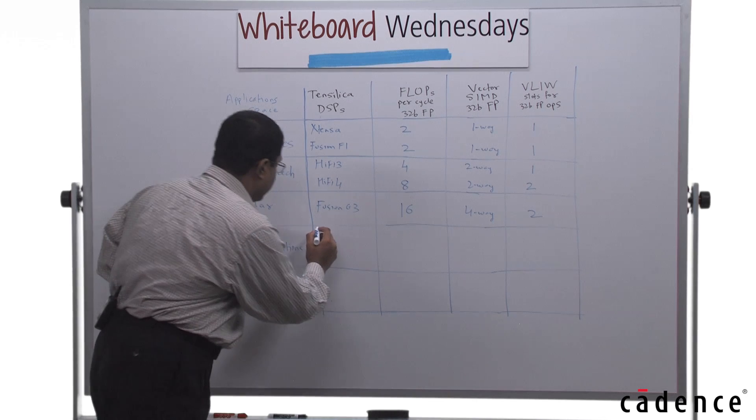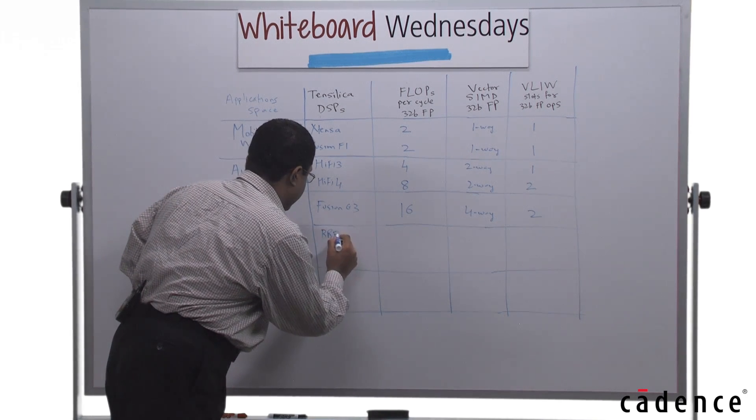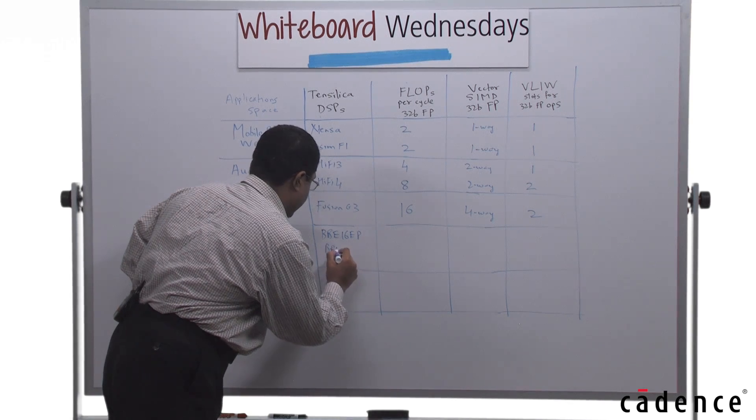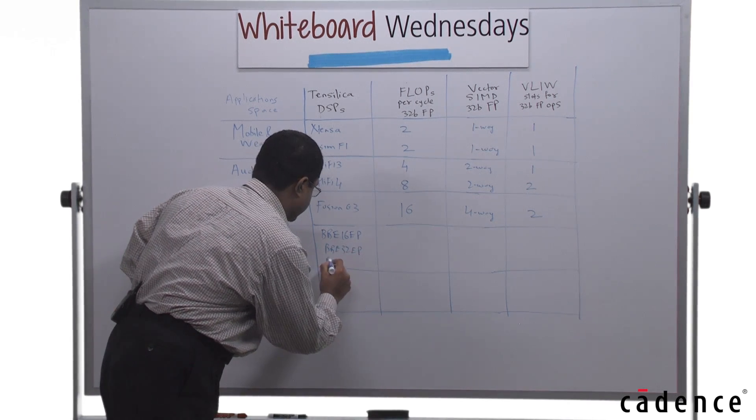For wireless communications, the BBE family: the BBE 16, the BBE 32, and the BBE 64.